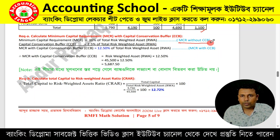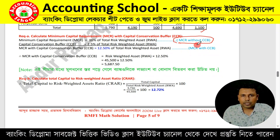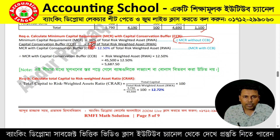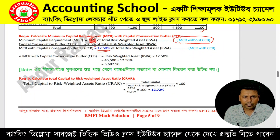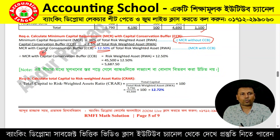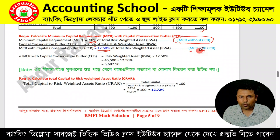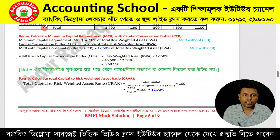MCR without CCB is 10% of RWA. The Capital Conservation Buffer rate is 2%, so MCR with CCB is 10% + 2% = 12% of RWA. This is the difference between MCR without CCB and MCR with CCB.